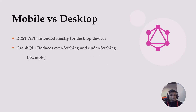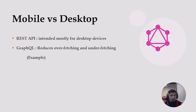Let's start with the differences between GraphQL and REST API. First of all, REST API is intended mostly for desktop devices — when you need all attributes from the API, you're free to go with REST. But if you want to reduce overfetching and underfetching, you should use GraphQL. For example, when you have one single endpoint with 10 attributes and in some cases you need five, in other cases three, you should select GraphQL.